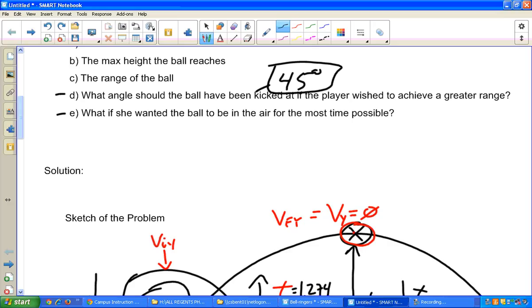If she wanted the ball to be in the air for the most time possible, we know the ball is going to go the highest in the air and be in the air for the most time when she kicks it straight up. So in math, what we define as straight up is 90 degrees. And there you have it. We've solved a pretty good example of a projectile motion problem. Hope this helps you guys out. I'll be back for more problems later. See ya.